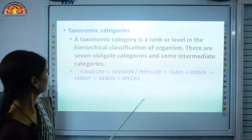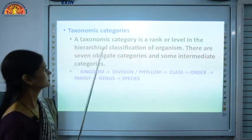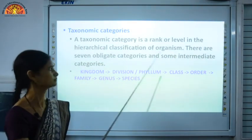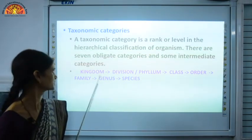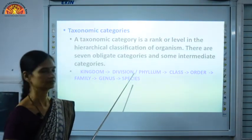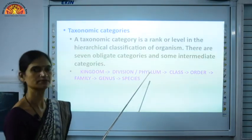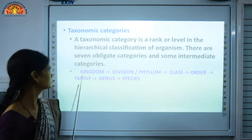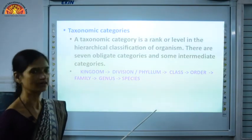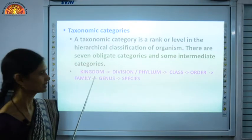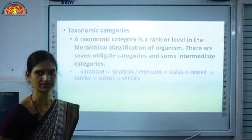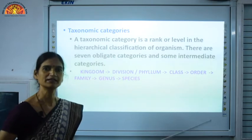Now, what are the different taxonomic categories? A taxonomic category is a rank or level in the hierarchical classification of an organism. When we classify any organism, we specify its kingdom, then division — in case of plants — or if it is an animal, we give the phylum heading, then class, order, family, genus, and species. This whole arrangement is in decreasing order — the organisms are put in decreasing order of their hierarchy. The biggest category is kingdom; on the whole earth there are only five kingdoms: Monera, Protista, Fungi, Plantae, Animalia.